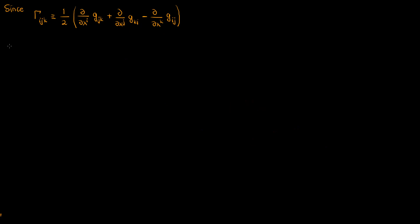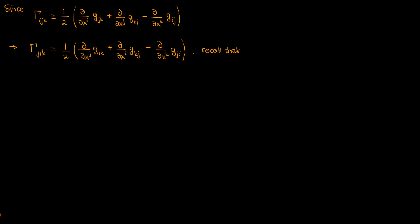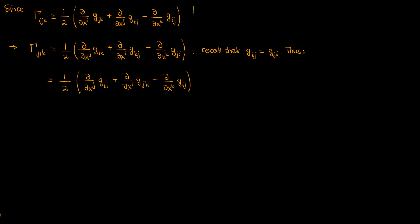By definition, the first kind Christ-awful symbol with index order j, i, k is the same formula with j and i switched on the right-hand side. If you recall from a previous video on the properties of the metric tensor, the metric tensor is symmetric, meaning g sub i, j equals g sub j, i. We can apply this to switch some indices on the right-hand side. This yields the exact same equation as gamma sub i, j, k, just with the first two terms switched — but since addition is commutative, that doesn't matter. So the first kind Christ-awful symbol is symmetric in its first two indices.